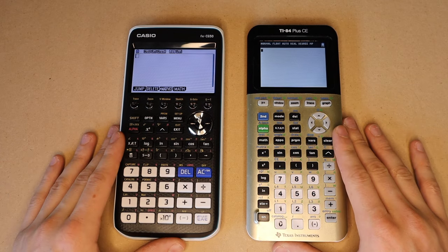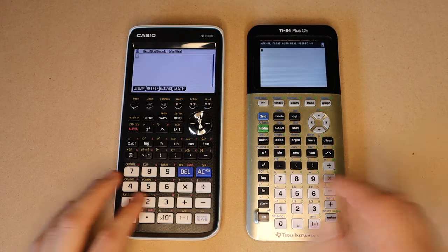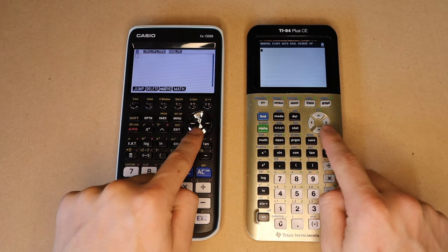So in terms of hardware, you can see they are a similar size and shape. They both have similar button layouts, with numbers down here, and then a directional pad.